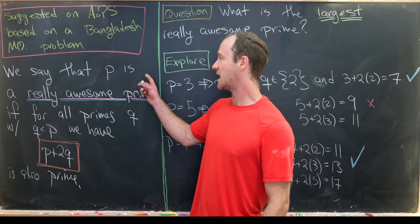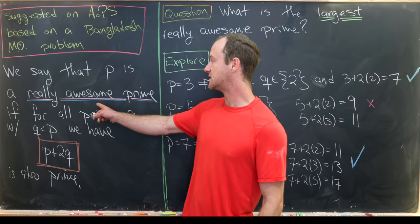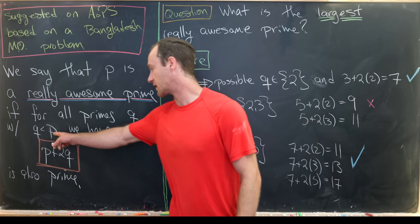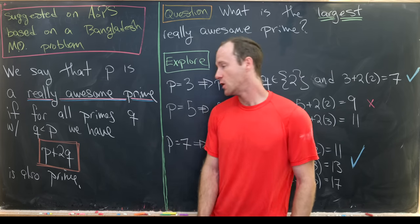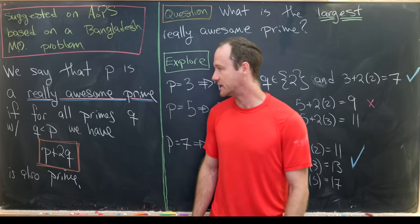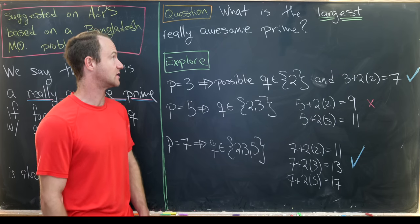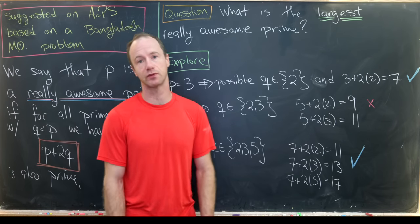We're going to define a prime p to be a really awesome prime if for all primes q that are smaller than p, we have p plus 2q is also prime. And then our goal, the question, is to find the largest really awesome prime.